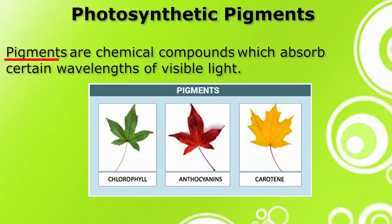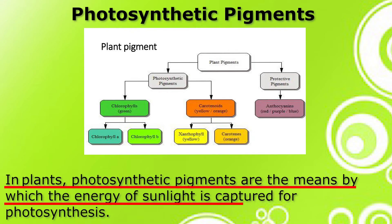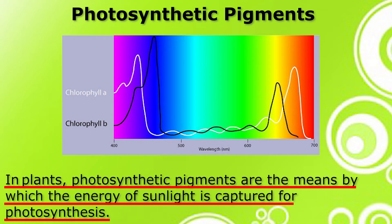This oxygen is utilized by living beings during respiration. Thus, chloroplasts play a vital role in controlling the concentration of carbon dioxide and oxygen in the atmosphere. Now, let's move on to the second part of photosynthetic apparatus: the photosynthetic pigments. Pigments are chemical compounds which absorb certain wavelengths of visible light. In plants, photosynthetic pigments are the means by which the energy of sunlight is captured for photosynthesis. Since each pigment reacts only with a narrow range of the spectrum, there is usually a need to produce several kinds of pigments, each of a different color, to capture more of the sun's energy.